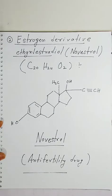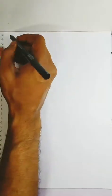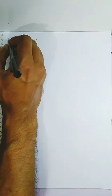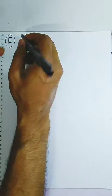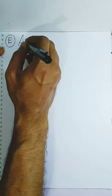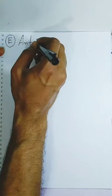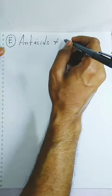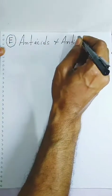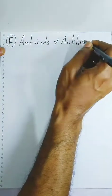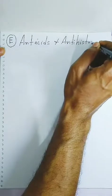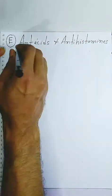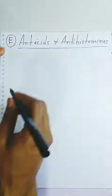Now we will see the next type of drugs — that is anti-acids and anti-histamines. These are the last types of drugs we are going to see.